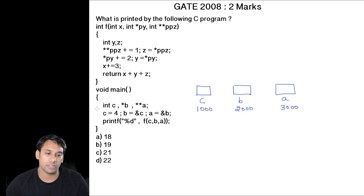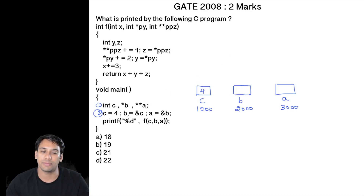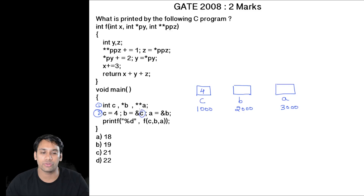Now in line number 2, the value stored in variable c is 4, therefore c is now going to store 4. The next statement is b = &c, that means we are going to store the address of variable c into b. Therefore, the variable b is now going to store 1000.